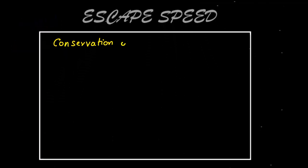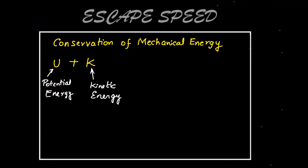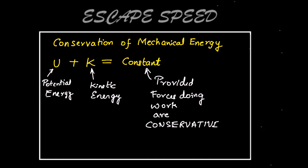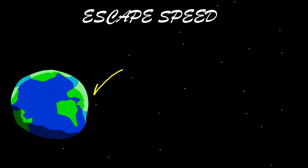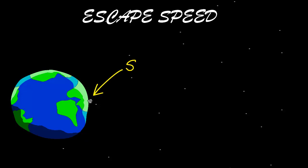We can use the conservation of mechanical energy, which I explain in detail over here, and talk about how gravity is a conservative force. So let's say the stone is kicked from the surface S. When kicked with escape speed, it just escapes earth's gravity, or in mathematical terms, reaches infinity and stops.